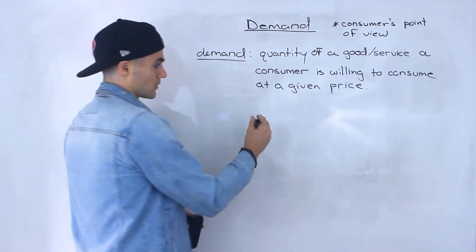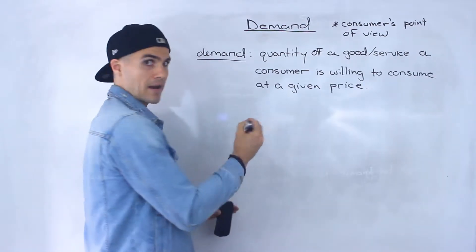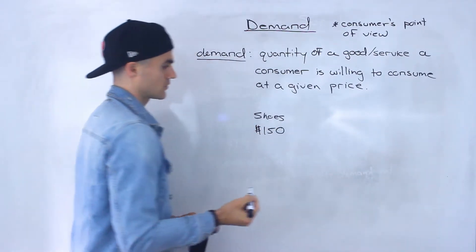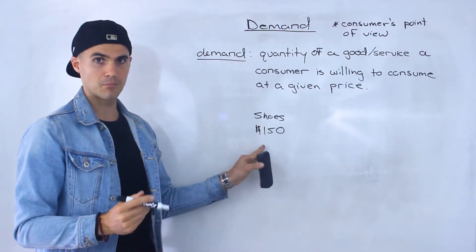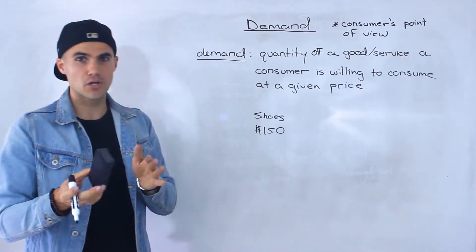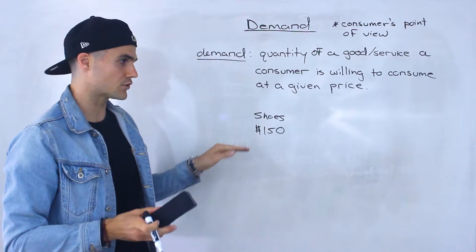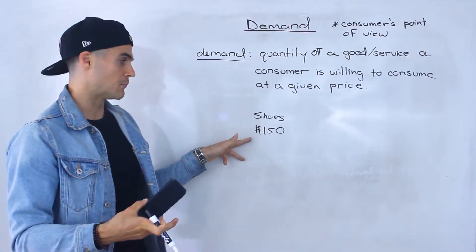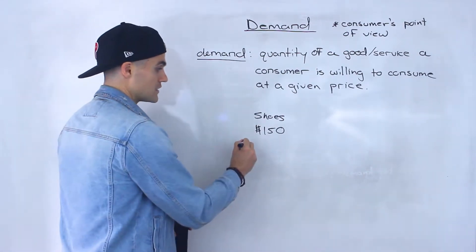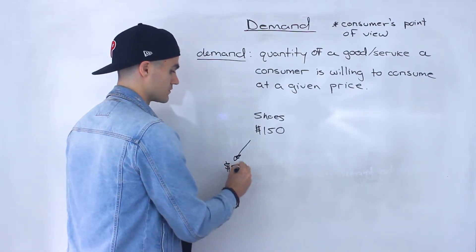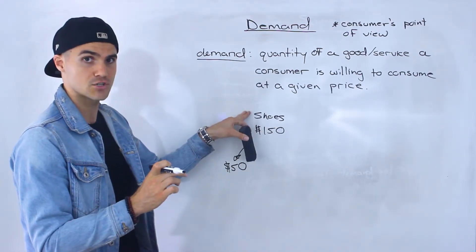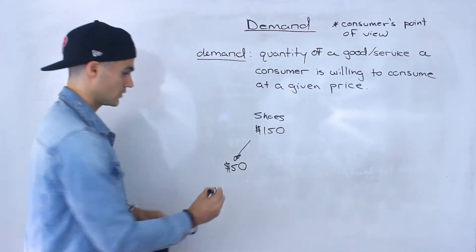Let's say that you're a consumer looking at a pair of shoes that you really want, and they cost $150 right now. You haven't bought them yet, but you're right on the edge — that price of $150 has you thinking about it. You really want these shoes but you're not fully set on that price yet. Well, what would happen if these shoes go on sale for $50? You were very close to purchasing at $150, so if they go down to $50, you're definitely going to buy them.